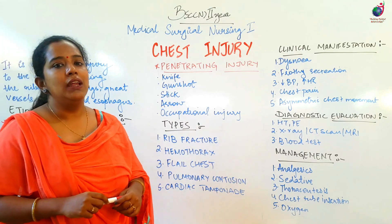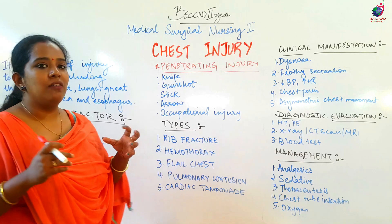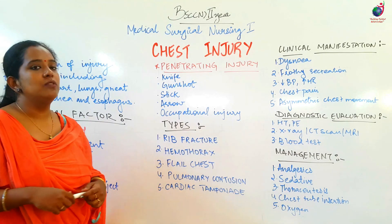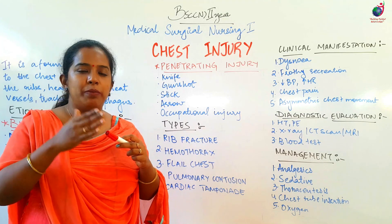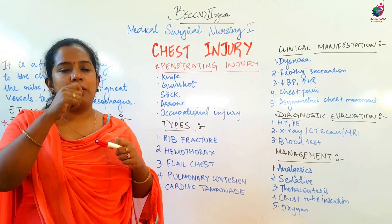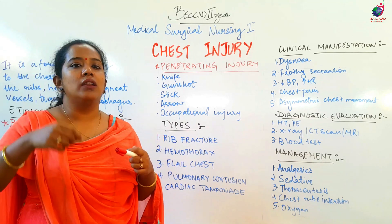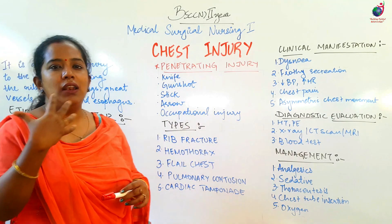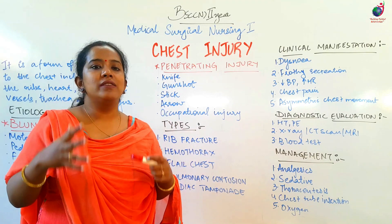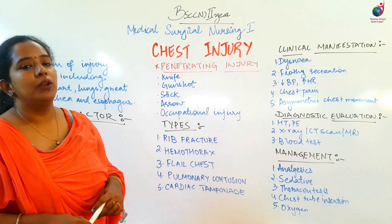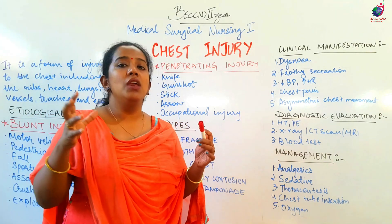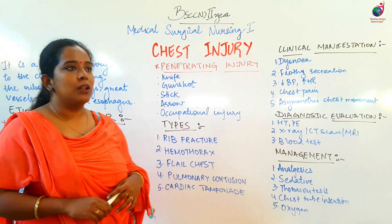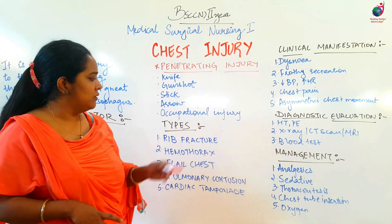Types of chest injury mein ribs ka fracture ho sakta hai. Pleural cavity mein blood accumulate ho sakta hai jis ko hum hemothorax kehte hain. Flail chest woh hota hai jahaan ribs mein koi bhi breakage ya fracture aa jata hai aur ribs apne rib cage se detach ho jaate hain aur freely float kar rahe hain chest cavity mein. Pulmonary contusion ka matlab hai lung ke parenchyma ya membrane mein kisi bhi tariqe ka pressure ya injury. Cardiac tamponade ka matlab hai pericardial space mein fluid bhar jaane ki wajah se heart pe andar ki taraf pressure parna.